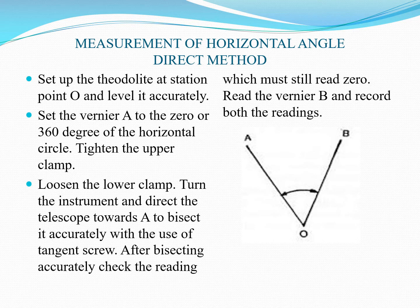After that, set vernier A to zero or 360 degrees on the horizontal circle. Then tighten the upper clamp so that the reading does not change. After that, loosen the lower clamp, turn the instrument, and direct the telescope towards the ranging rod at point A.